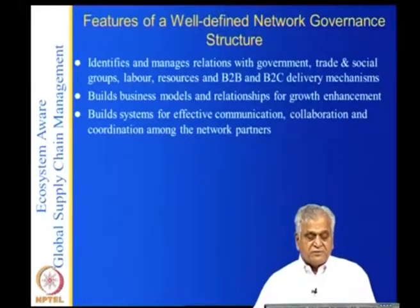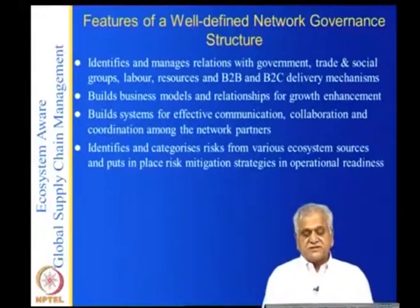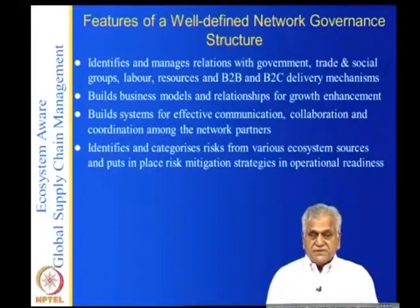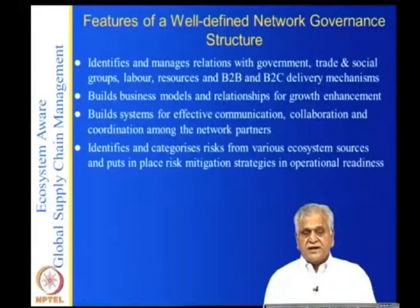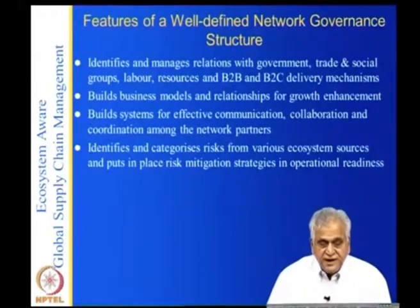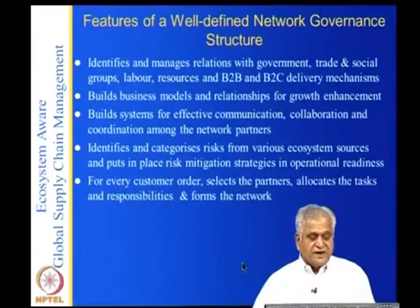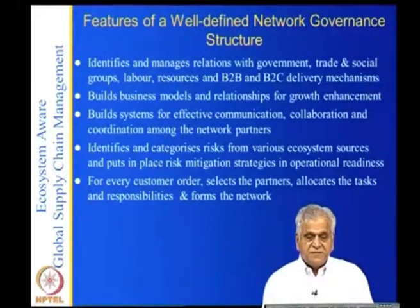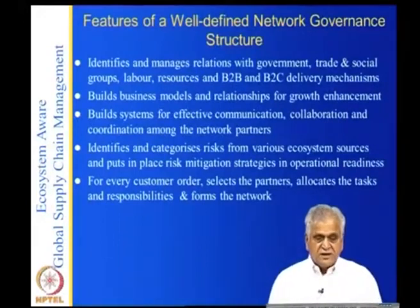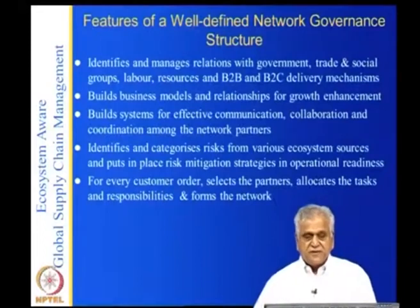The governance structure also identifies and categorizes risks from various ecosystem sources and puts in place risk communication strategies and operational readiness. There are several risks in the global supply chain that can occur — from oil price increases, from the government, or from various other sources. For every customer order it selects partners, allocates task responsibilities, and forms the network. Network formation is particularly important — once there is a customer order you have to select the partners and tell them what to do.